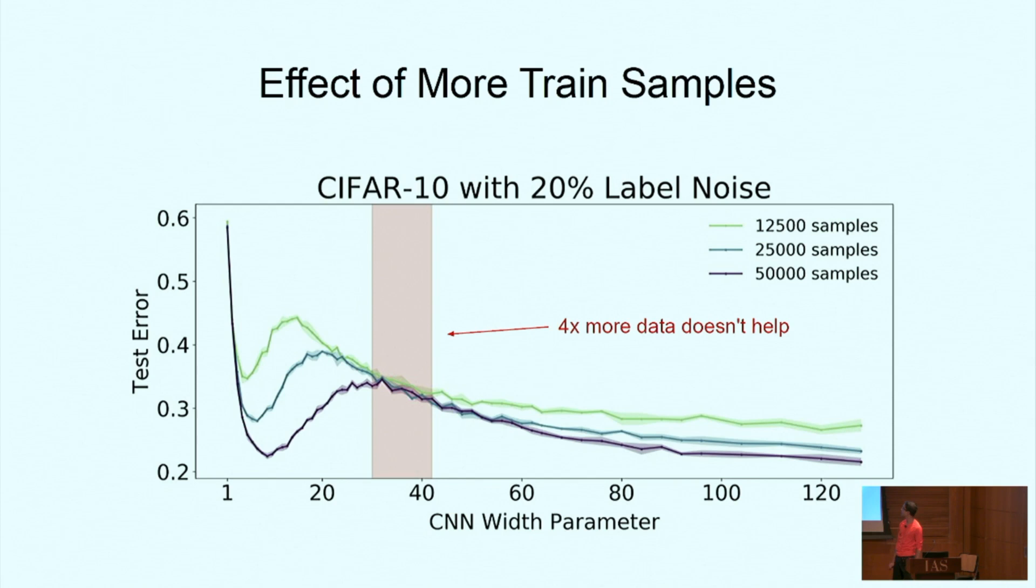Let's see what double descent tells us about increasing the number of samples. This is the same kind of plot as before where we plot the test error as a function of model size. The lines of different colors correspond to increasing the size of the data. As we increase the number of trained samples from the light green to the dark purple, two things happen. First, generally test error gets lower since having more samples should help you, but also the interpolation peak in test error shifts to the right because it's harder to interpolate more samples.